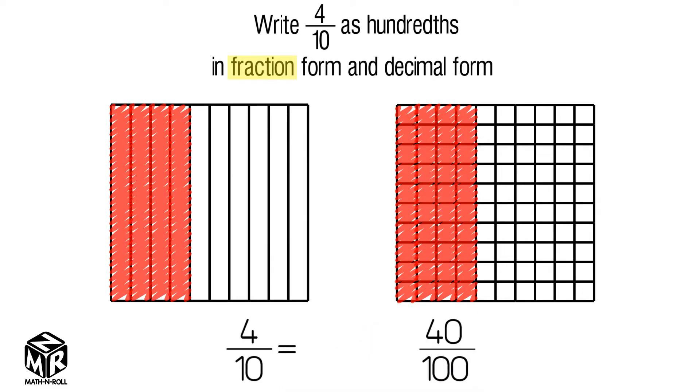To go from 4 tenths to 40 hundredths, we multiply the numerator and the denominator by 10. So 4 tenths equals 40 hundredths.